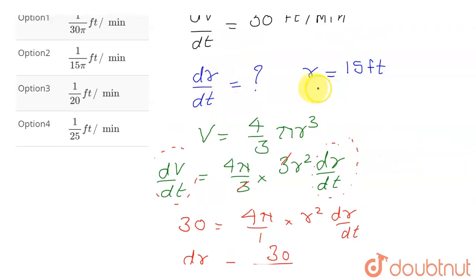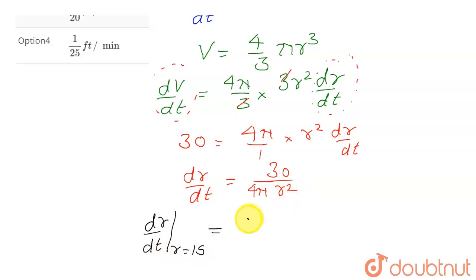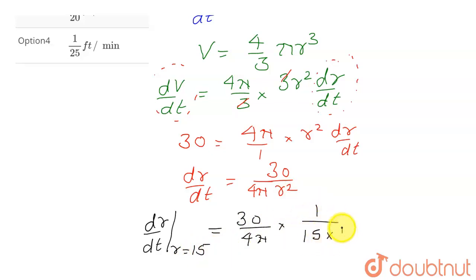We need to find dr/dt when r = 15 feet. Substituting r = 15: dr/dt = 30 / (4π · 15²) = 30 / (4π · 1/15 · 1/15). Simplifying: 30 and 2×15 cancel to give 1, leaving 1/(2·15) = 1/30. So dr/dt = 1/(30π).